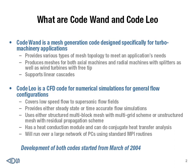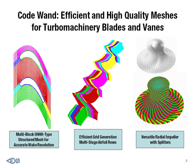This is a very special kind of capability. In addition to that, inside Code Leo we also have a heat conduction module which solves the conduction equation. The whole system can run over a network of workstations or PCs using standard MPICH2. The whole system was developed starting in March of 2004. This is a general description of our core capabilities — Code 1 and Code Leo.